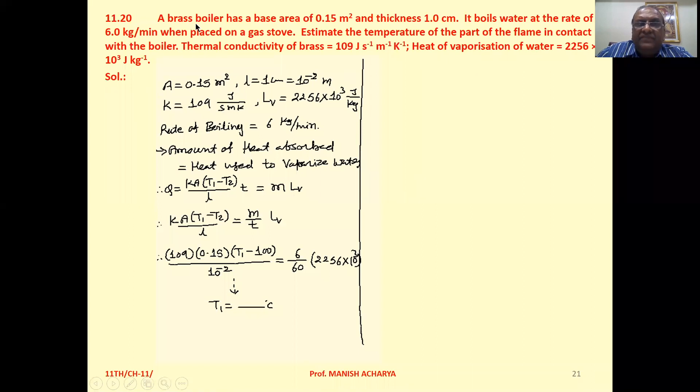Problem 11.20. The heat of vaporization of water is 2256 × 10³ joules per kilogram. Now see, the area of the base is 0.15 m² given to you.